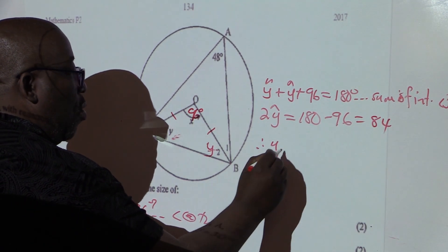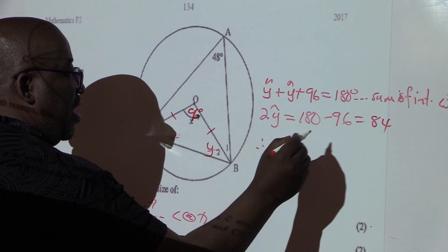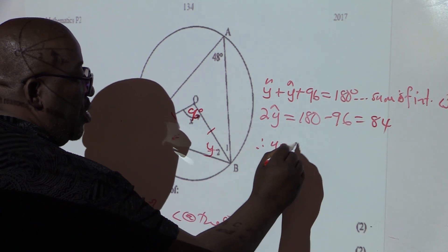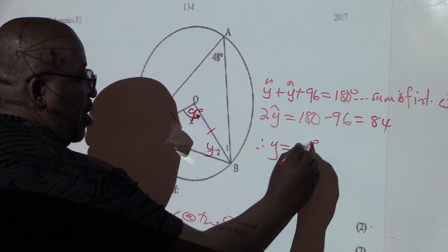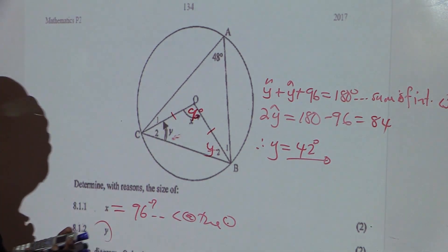Therefore, Y will be equal to 84 divided by 2. 8 divided by 2 is 4, and 4 divided by 2 is 2. So Y will be equal to 42 degrees.